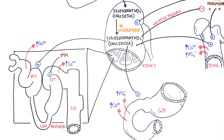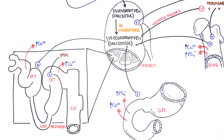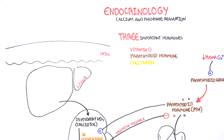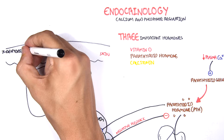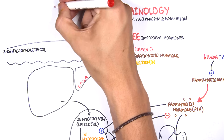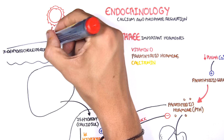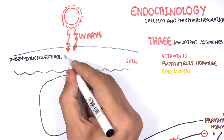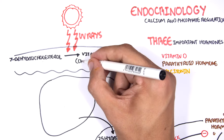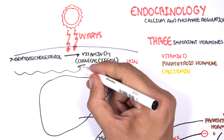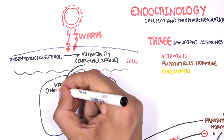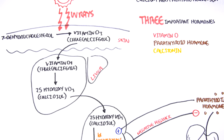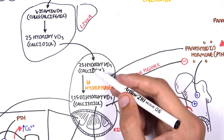Let's look at where calcidiol and calcitriol come from. The whole process originates in the skin, where a cholesterol called 7-dehydroxycholesterol is converted by the sun's UV rays to vitamin D3, cholecalciferol. Cholecalciferol then travels to the liver, where liver enzymes convert it to 25-hydroxyvitamin D3 — calcidiol. This calcidiol then moves to the kidneys, where it gets converted by 1-alpha-hydroxylase into active calcitriol.